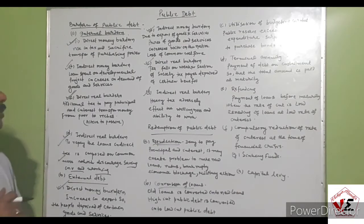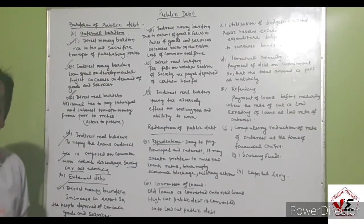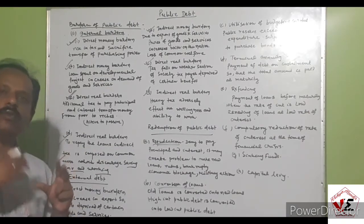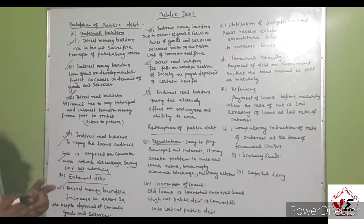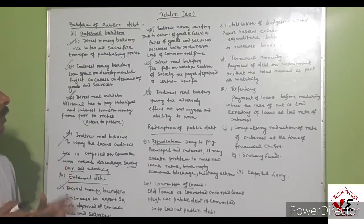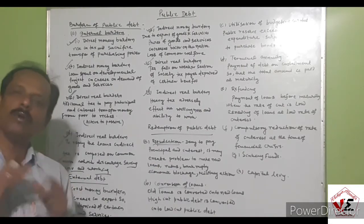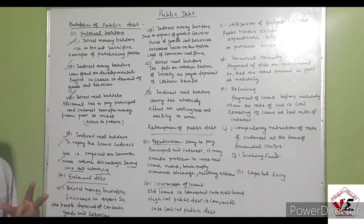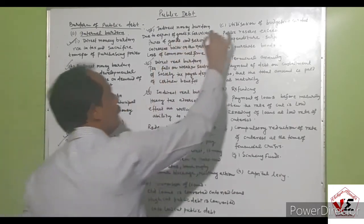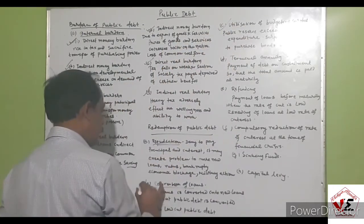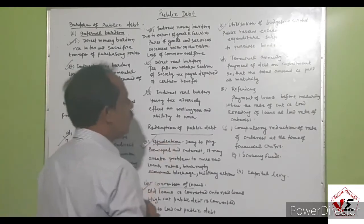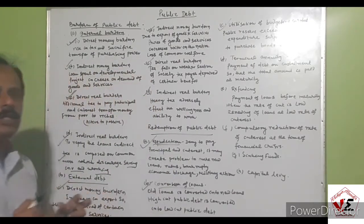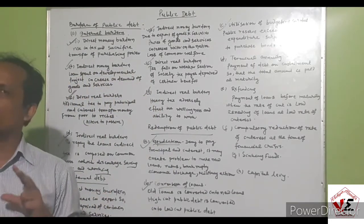The next method is utilization of budgetary surplus. If there is a surplus in the budget, the government uses the budgetary surplus to repay the loan. If expenditure is less than current revenue, the current surplus amount is used to repay the public debt — that is budgetary surplus utilization.